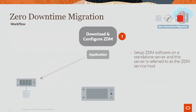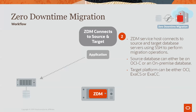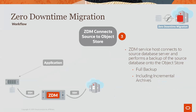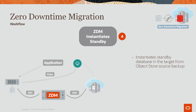Now let's look at the ZDM workflow. First, set up ZDM software on a standalone server, referred to as a ZDM service host. The ZDM service host connects to source and target database servers using SSH to perform migration operations. The source database can either be on OCIC or an on-premises database. The target platform can be either OCI, XRCS, or XRCC. ZDM service host connects to the source database server and performs a backup of the source database onto the object store, including full backup as well as incremental backups. ZDM supports various backup mediums, but in this workflow we are taking the example of object store as a backup medium.